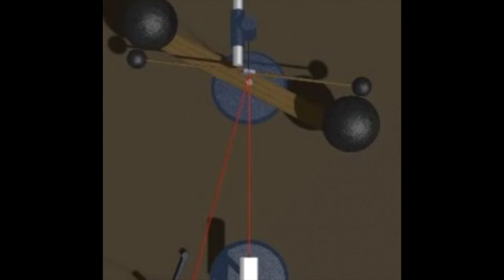Watch how the laser starts off shining onto a certain spot on a scale and then as the large masses are brought close to the smaller masses the attraction between the two of them causes the lasers to swing. Have a look.